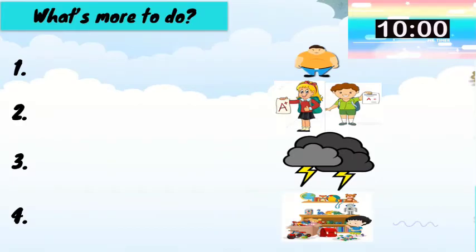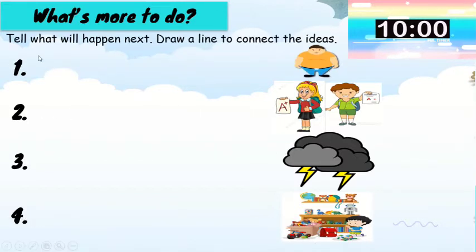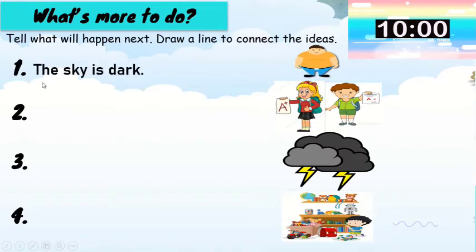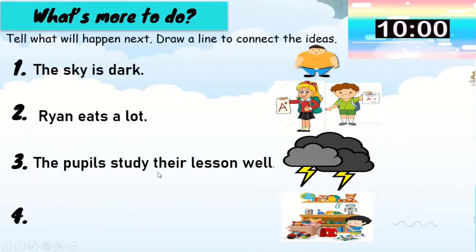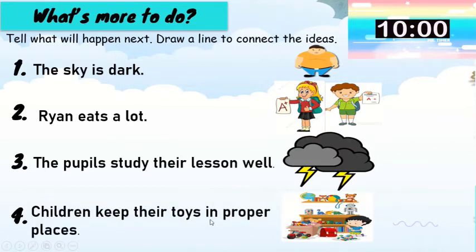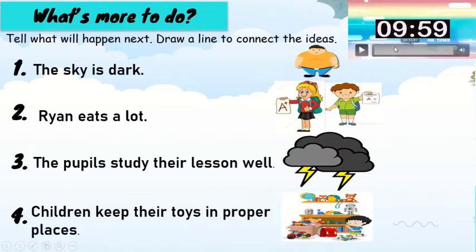Let's move on to what's more to do. Tell what will happen next. Draw a line to connect the ideas. Let us read first. Number one: the sky is dark. Number two: Ryan eats a lot. Number three: the pupils study their lesson well. Number four: children keep their toys in proper places. I will give you ten seconds to answer this activity.